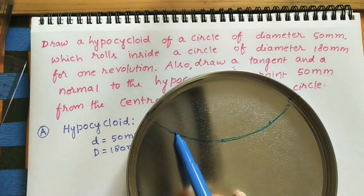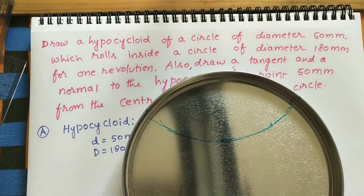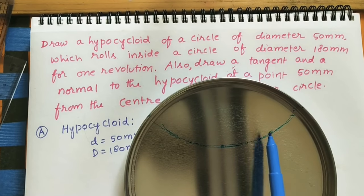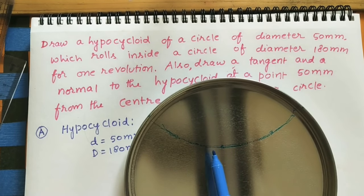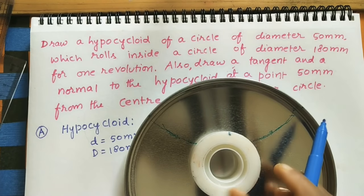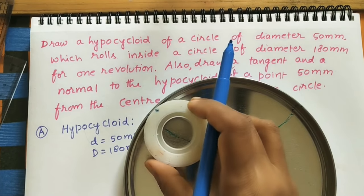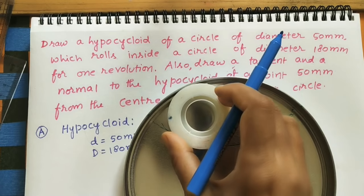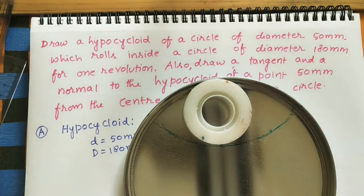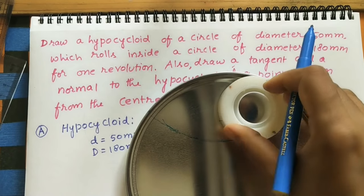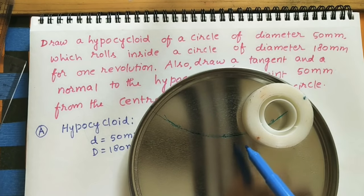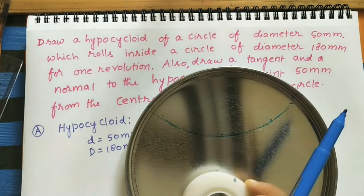This path is known as hypocycloid. So how to define hypocycloid: a hypocycloid is a curve traced out by a point on the circumference of a circle which rolls along another circle and inside it, without slipping, making one complete rotation. This path is called hypocycloid.